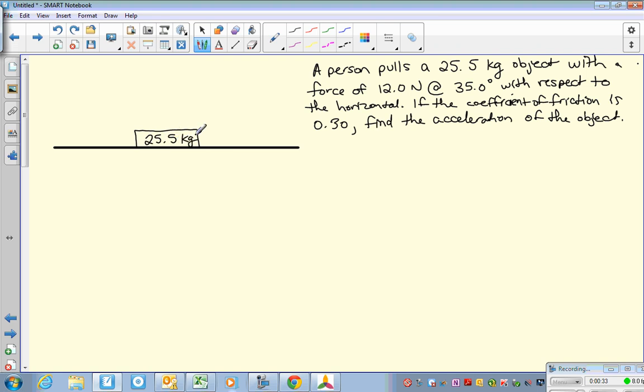And that's the mass with a force of 12.0 newtons at 35 degrees with respect to the horizontal. So this would be if they were pulling it horizontally, but they're not. They're pulling it at an angle of 35 degrees, and the force with which they're pulling is 12 newtons.